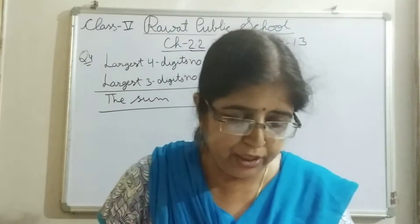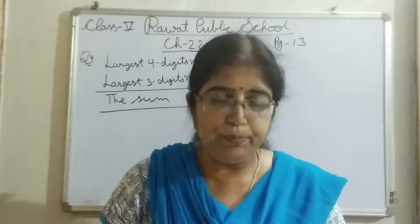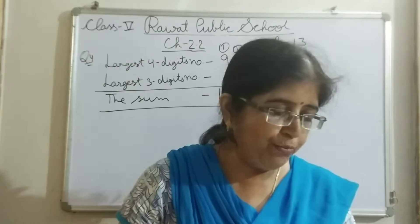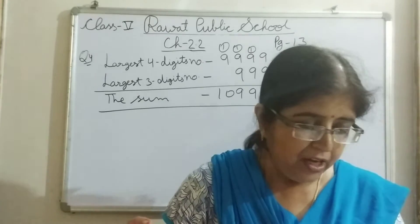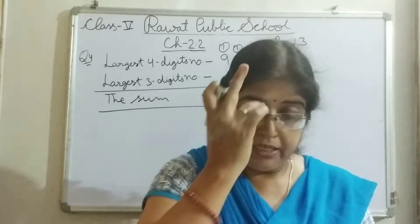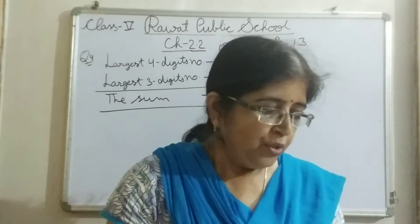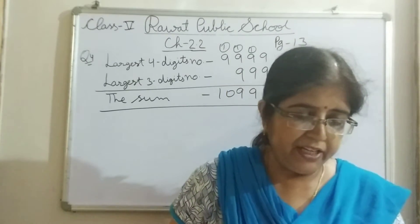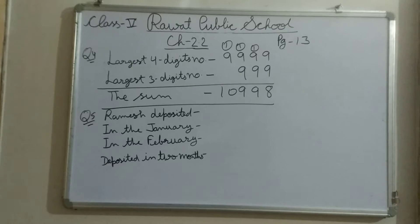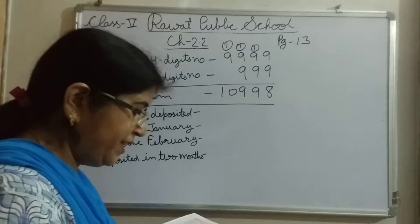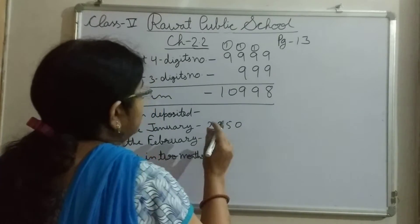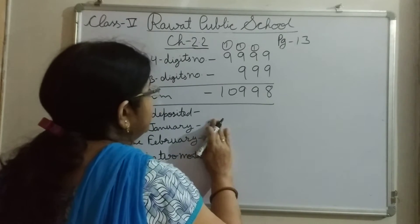Question 5: Ramesh deposited rupees 2,850 in the month of January and rupees 3,650 in the month of February in his bank account. What is the sum of money he deposited in two months? उसने January में कितने deposit किये and February में कितने किये, फिर क्या करना है आपको - sum of money. Ramesh deposited in the month of January: 2,850 rupees.